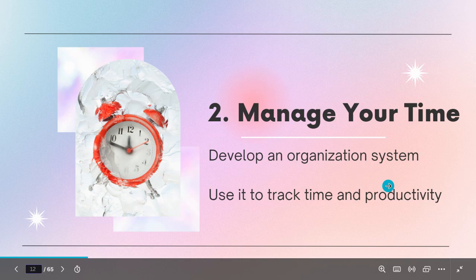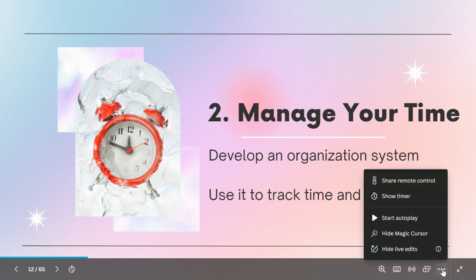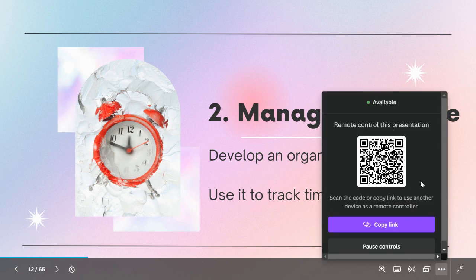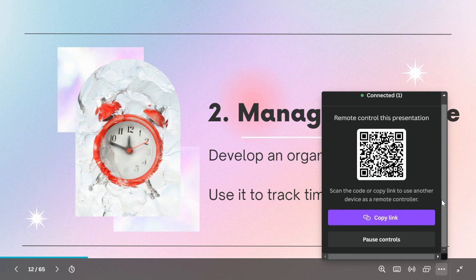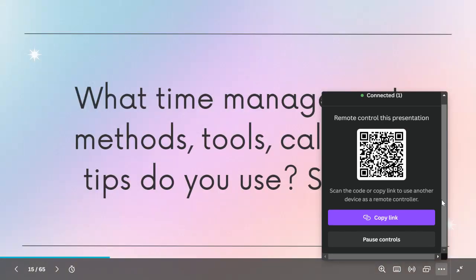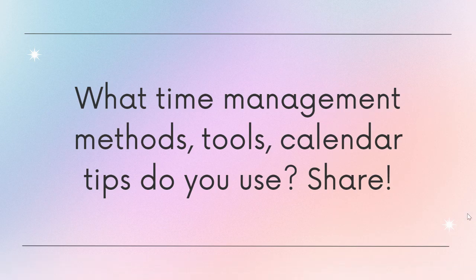Something kind of cool to know is that you can set up your Canva presentations to use a remote control to go through your slides. So if you're presenting somewhere and your clicker batteries die, you can actually use your phone to run your presentation. To do this, be in present mode and at the bottom of your screen there's a 'More' button. Select 'Share Remote Control' and it pulls up a QR code. Scan it with your phone or copy the link. You can also pause control at any point. I'm using my phone right now — not clicking anything on my computer — and going through the slides.